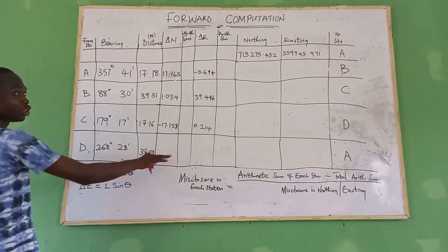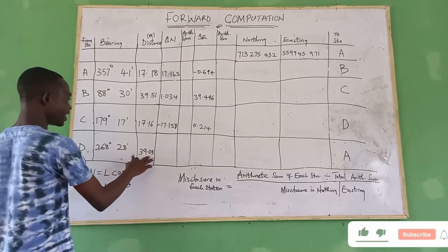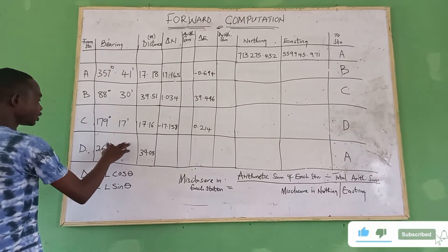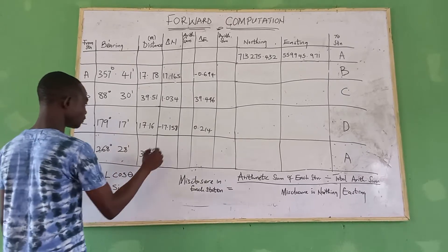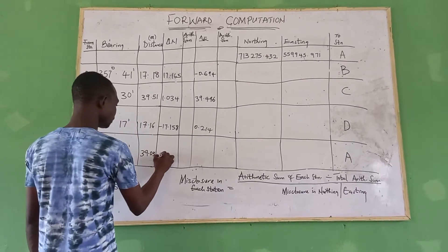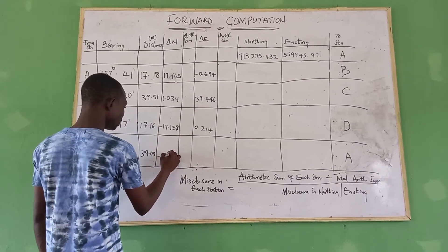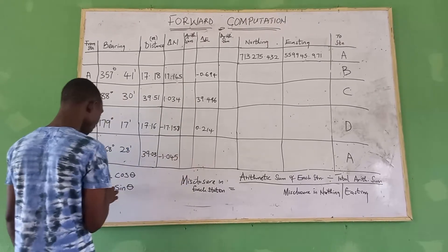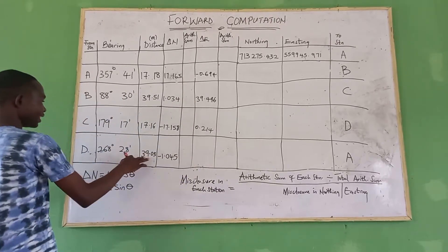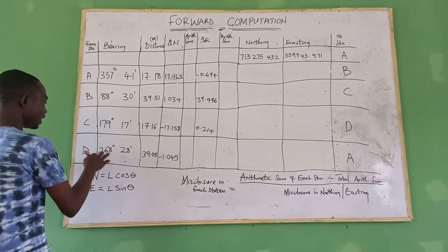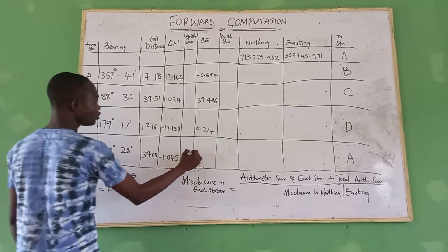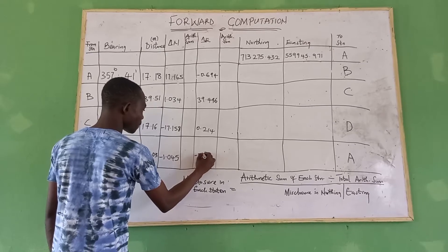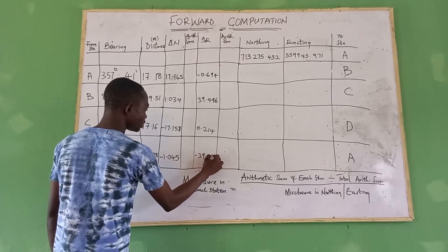While for the last station, station D, we have delta northing: 39.03 × cos(268° 28'), which gives us minus 1.045. Then for delta easting, we have 39.03 × sin(268° 28'), which gives us minus 39.066.